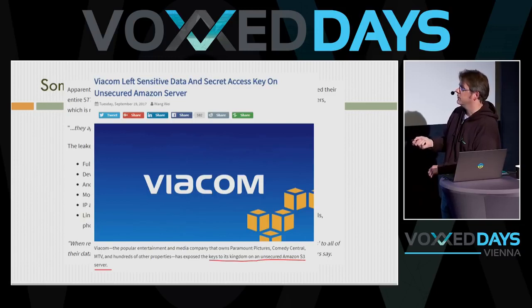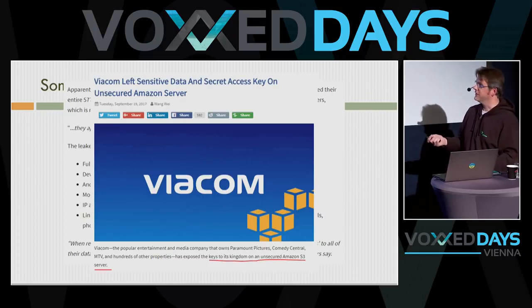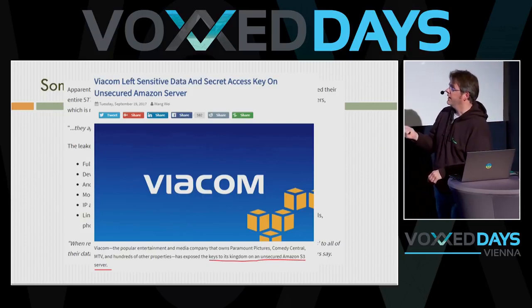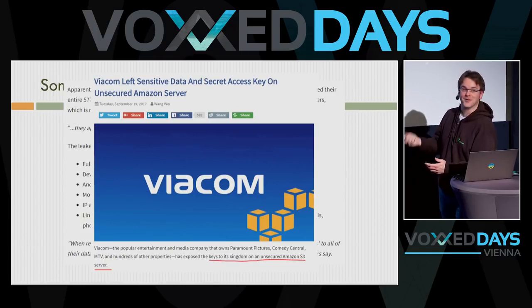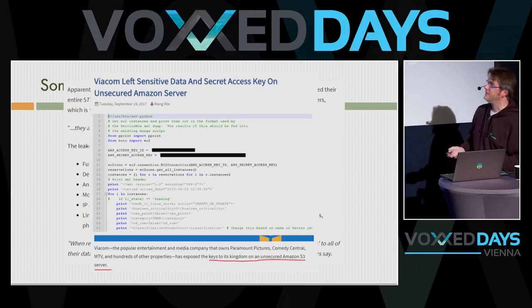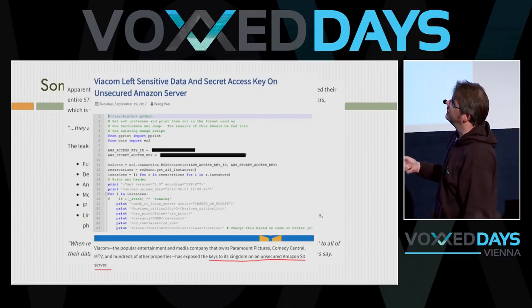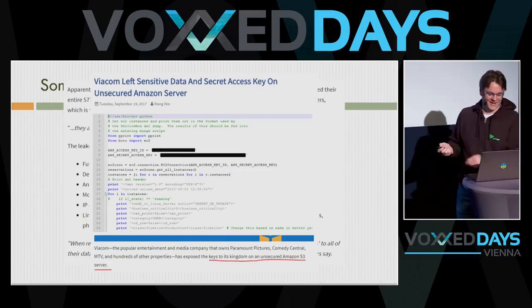Another interesting case: there were open S3 buckets found on the internet. An S3 bucket is protected by default, so you have to actively make it open to the internet. Security researchers are now looking for open S3 buckets. In the Viacom case, they had an open S3 bucket containing all the keys for all their customers, FTP services, everything — open to the internet. Somebody found this with a simple Python script revealing exposed AWS keys.